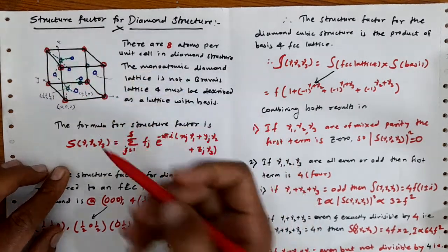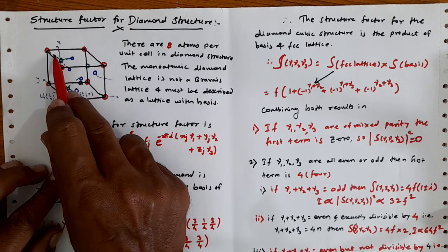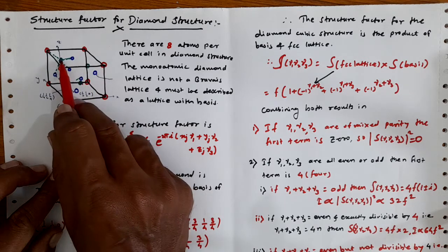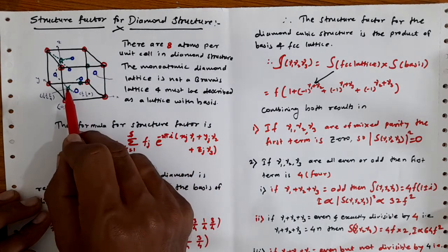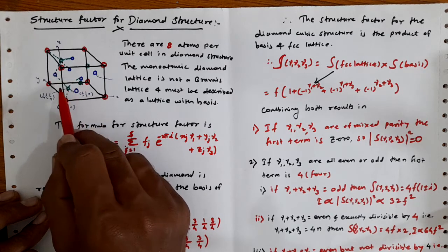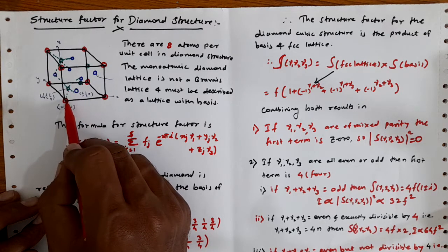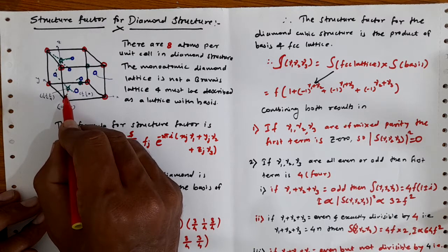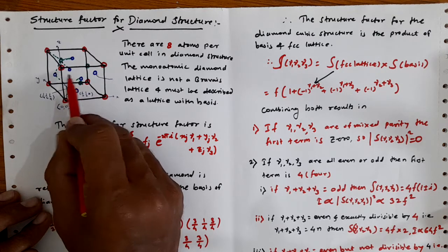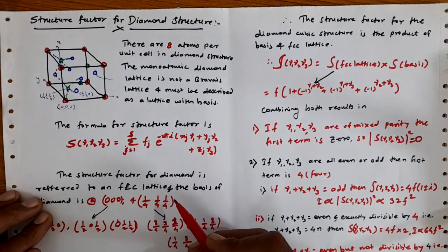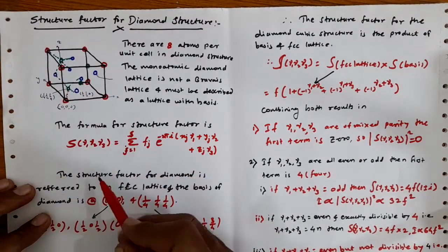Similarly, there are two atoms situated in the upper body diagonal of the upper face. One atom is at a tetrahedral position, connecting with the nearest face atoms. We can see three faces where it is nearest to one face center atom and one corner atom. It is shown in dotted lines in green, connected with the nearest corner atom and three nearest face atoms, forming the tetrahedral position.